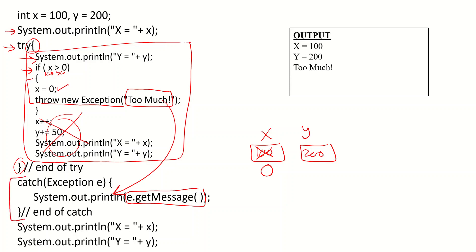Once we are done with the catch block, we will have two more statements: the value of x and the value of y. So we have the value of x as 0, and the value of y as 200. In this example, we started with two variables, found an exception, went to catch, ignored whatever remained in the try, and then output the current x and y.